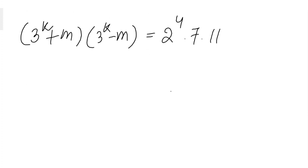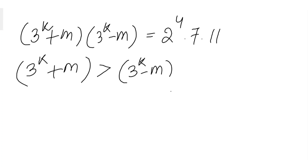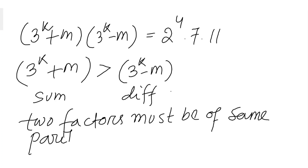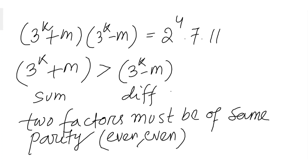Now, (3^k + m) must be greater than (3^k − m) since one is a sum and the other is a difference of two numbers. Also, these two factors must be of the same parity — both even or both odd — because their sum and difference must both be even. They cannot be one even and one odd.